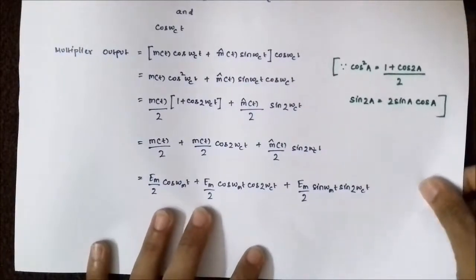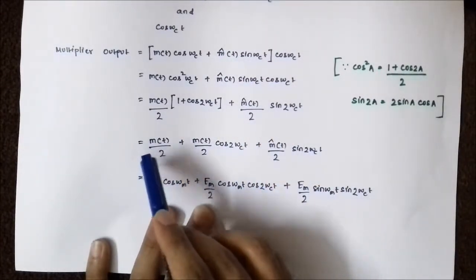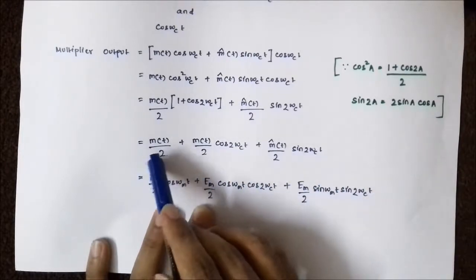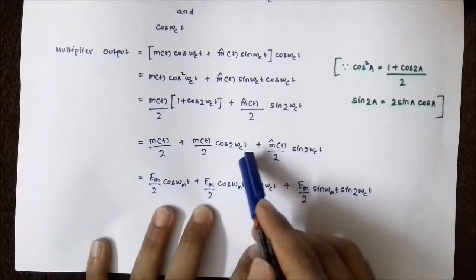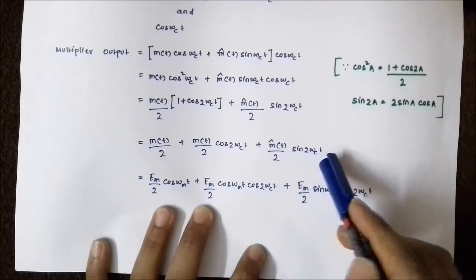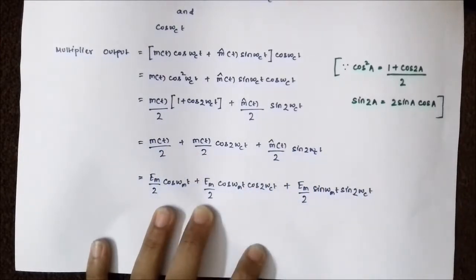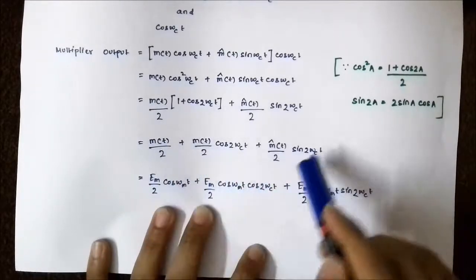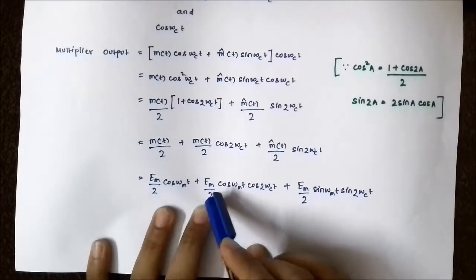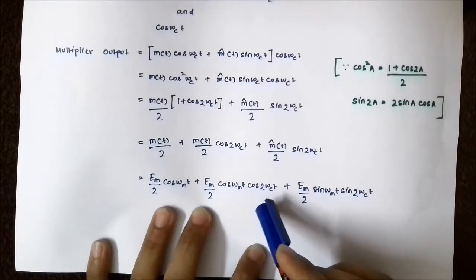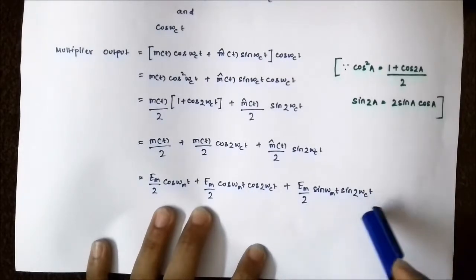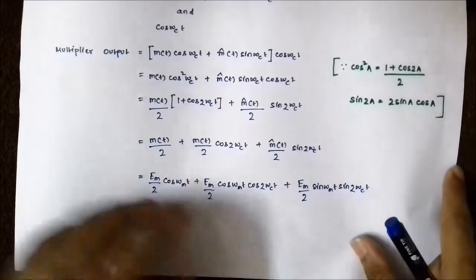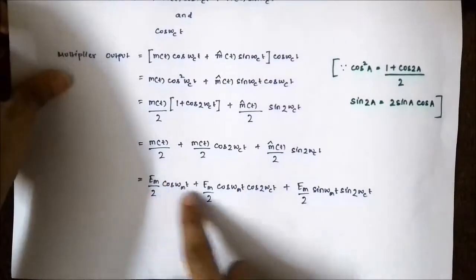Opening the bracket gives three terms: m(t)/2 + m(t)/2·cos(2ωc·t) + m̂(t)/2·sin(2ωc·t). Since m(t) = Em·cos(ωm·t), substituting gives: Em·cos(ωm·t)/2 + Em/2·cos(ωm·t)·cos(2ωc·t) + Em/2·sin(ωm·t)·sin(2ωc·t).